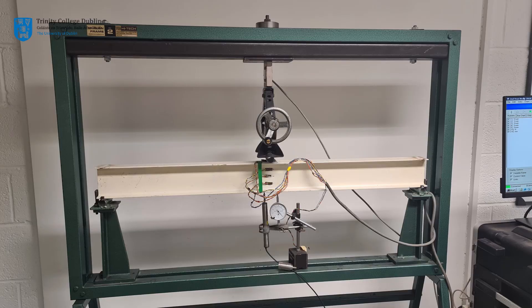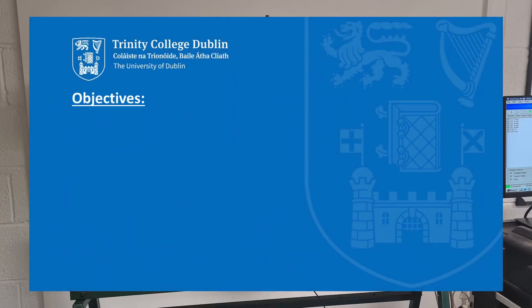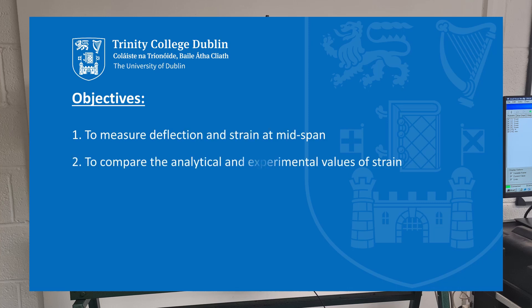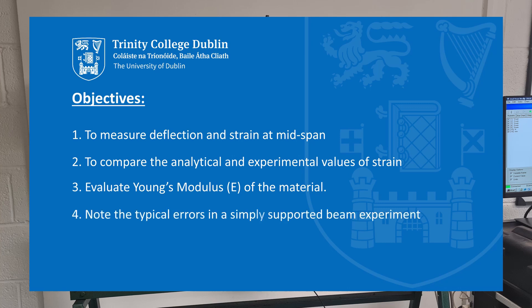This experiment has four objectives: 1) to measure deflection and the strain at mid-span; 2) to compare the analytical and experimental values of strain within the beam; 3) to use the measured deflections and theory to evaluate the Young's modulus of the material; 4) to note the sources of errors in a typical simply supported beam experiment.